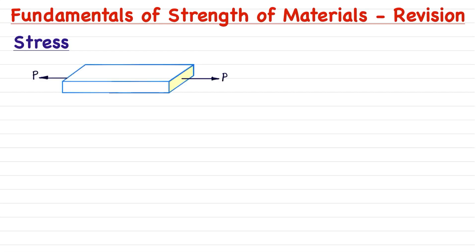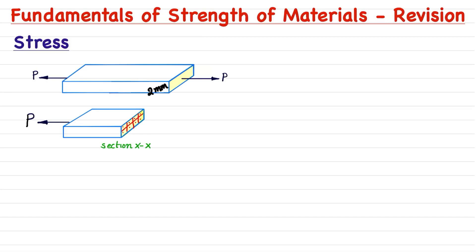Consider a prismatic bar having the same cross section throughout its entire length, subjected to an axial normal force. Under the action of this force, it will develop stresses because of the material bonding present between the particles. To illustrate stress, consider a part of this bar across section XX. If this bar is 2 mm by height and 4 mm for width, dividing all sides into elements of 1 mm side gives 8 elements in total, represented across this section. Under the action of this force, a resisting force develops across each of these 8 elements.